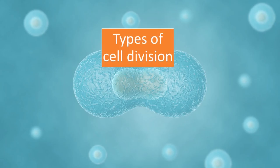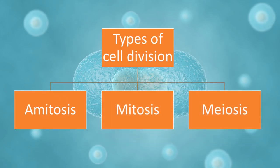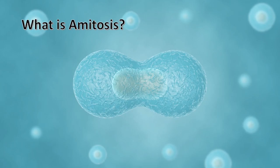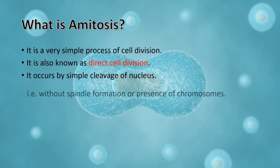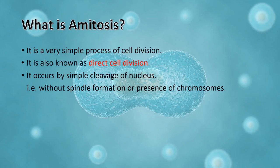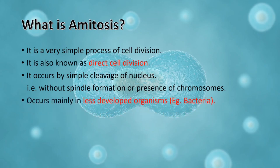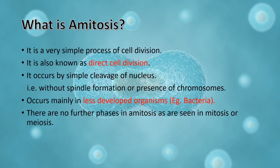Cell division is of three types: amitosis, mitosis, and meiosis. In many course books you might not find amitosis, but it is a very important process. Amitosis is a very simple process of cell division, also known as direct cell division. It occurs by simple cleavage of the nucleus, without any spindle formation or presence of chromosomes. It occurs mainly in less developed organisms, for example bacteria, and there are no further phases in amitosis.